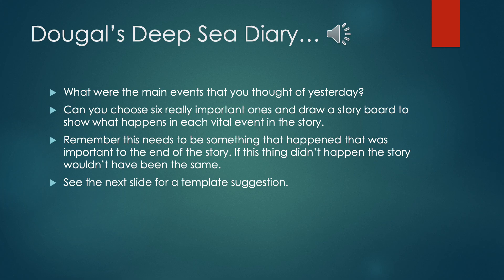Maybe it was the event of something going wrong — would it have still been as exciting to listen to and read if that thing didn't happen? On the next page there's a template suggestion for your storyboard, so you can draw six pictures. If you think there might have been less than six important events, you don't have to fill all six boxes.